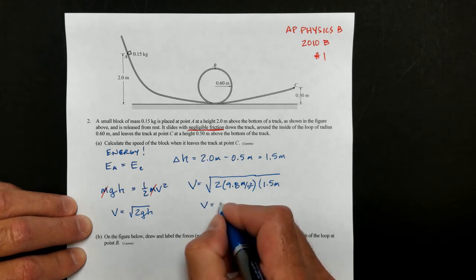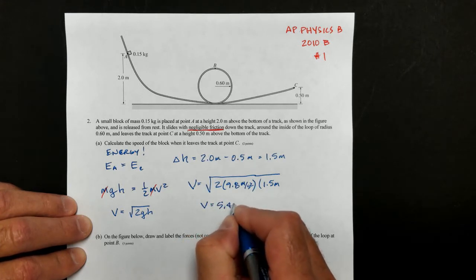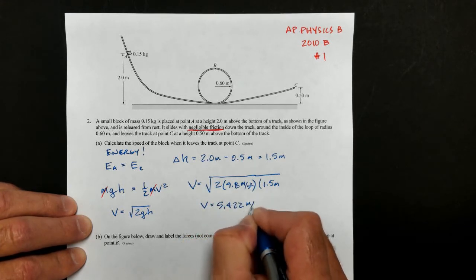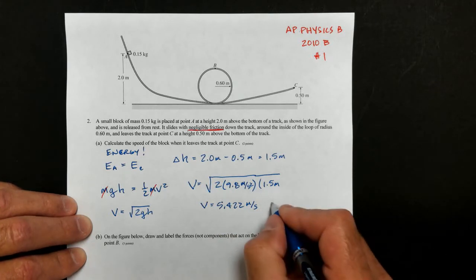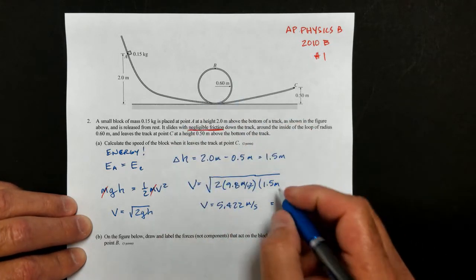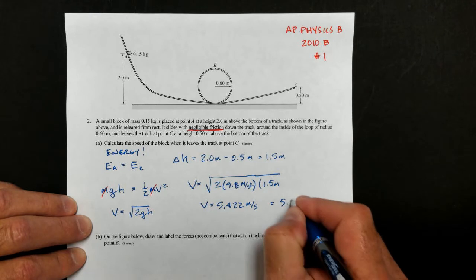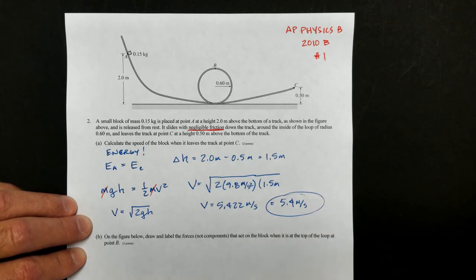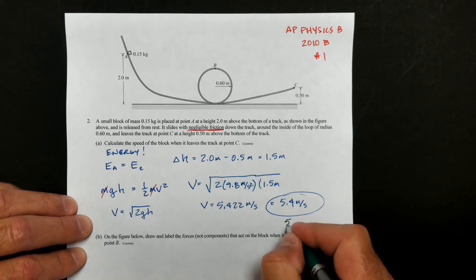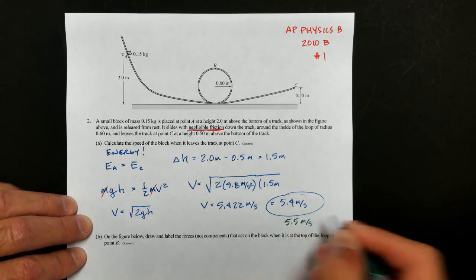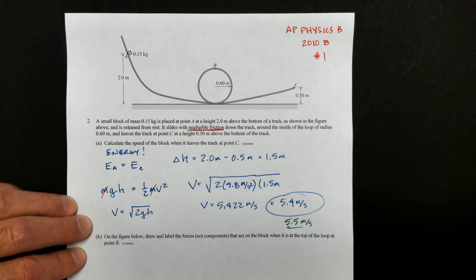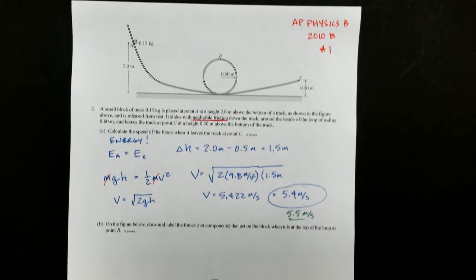So we can then say V is equal to root 2, I'm going to use 9.8, you can use 10 if you prefer, times 1.5 meters. And if you plug and chug and do the math, you're going to get 5.42 meters per second at point C. We're going to round that to 2 digits, so we're going to say 5.4 meters per second at point C. If you were using g equals 10, it comes out to 5.5 meters per second. Okay, that's the first part. Just two points for that one.